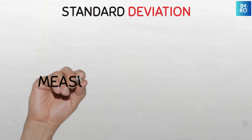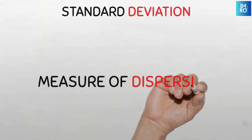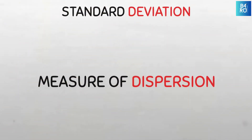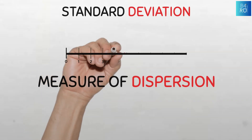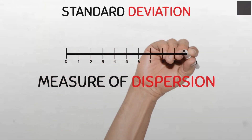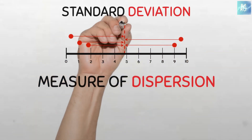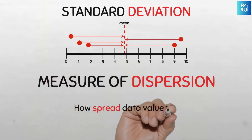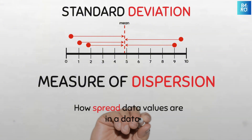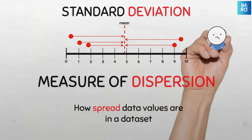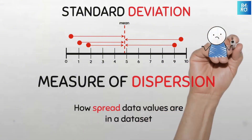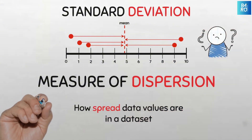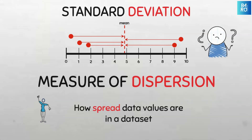Standard deviation is a statistical measure of dispersion that quantifies the variability or spread of a set of data around its mean. It tells us how spread or scattered all the data values are from the mean of the data. I will begin with the description of the formula and then solve an example.